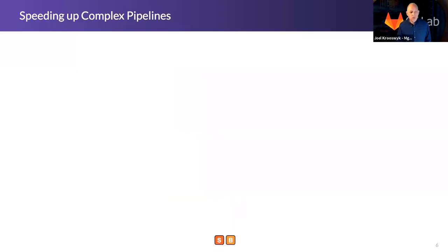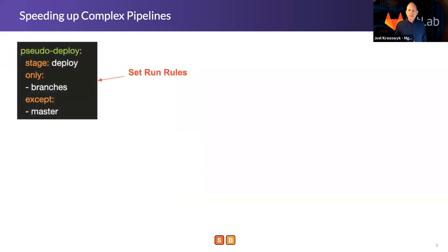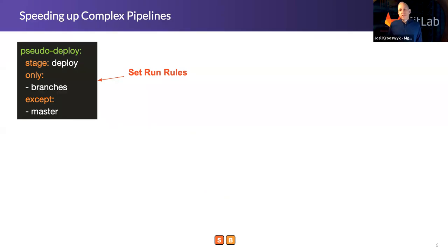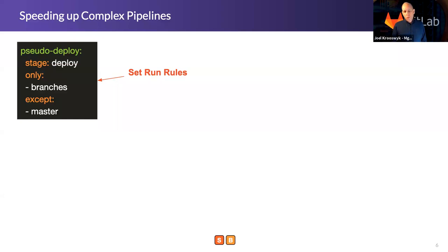These features are part of regular GitLab with no Premium requirement. Another thing we can do to speed up pipelines is set run rules — the `only` and `except` keywords control when jobs should run. Not every job needs to run every time. Maybe you only want a job to run when there's a code change to certain files, only on certain branches, or only when it merges to master. Those controls can save you an enormous amount of time when your pipeline runs.